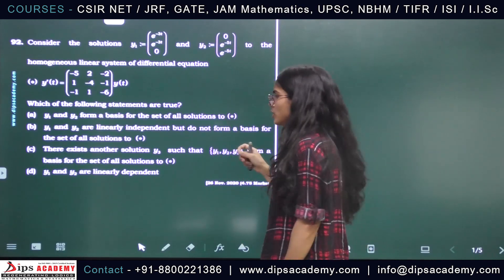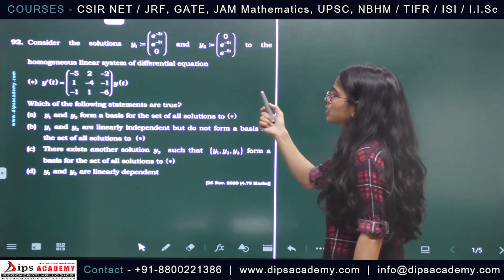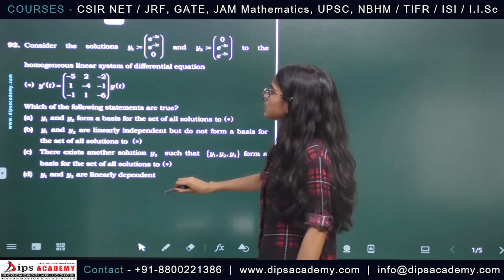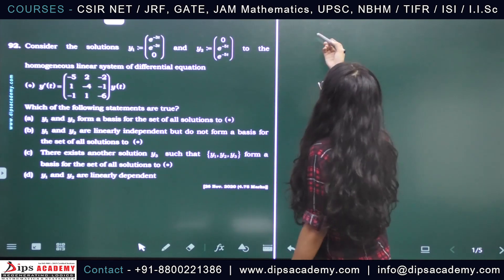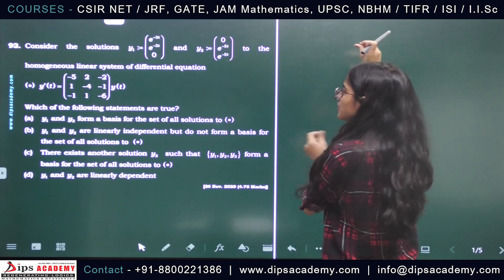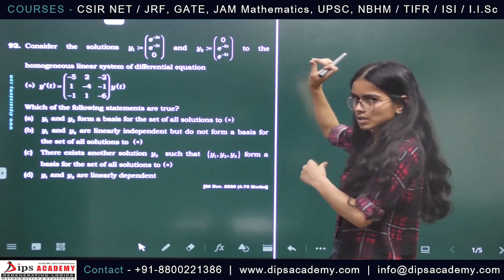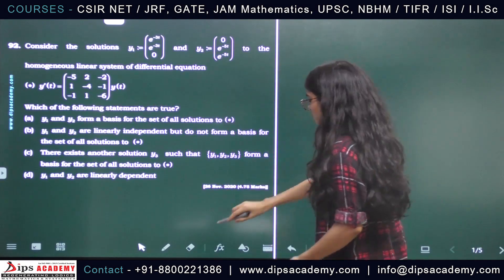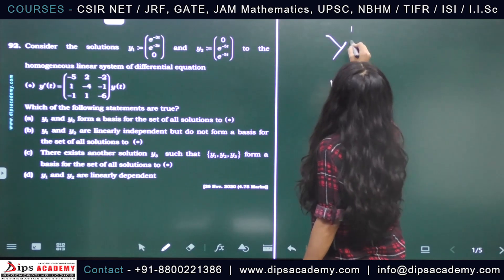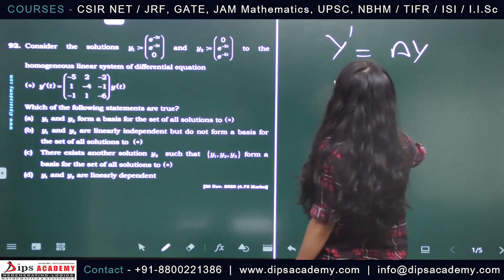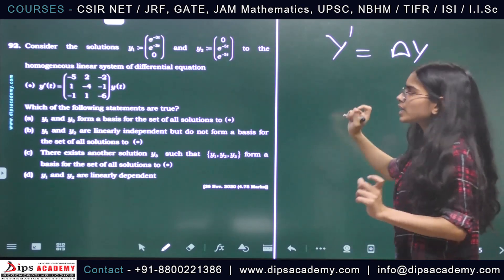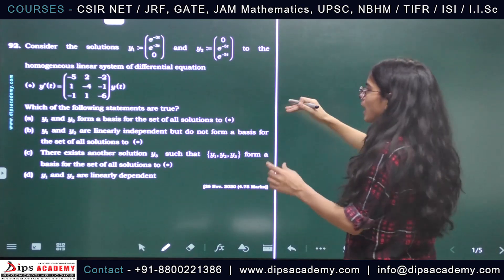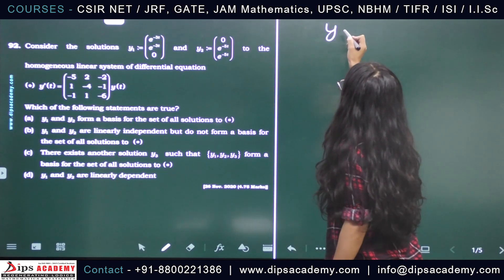This is a short form — normally we are given three differential equations and we convert them into matrix form: y' = Ay. Here we are given directly in this form. Let me show you how to write this out.